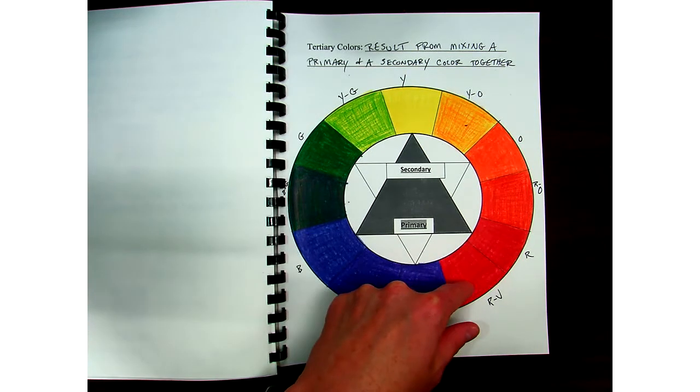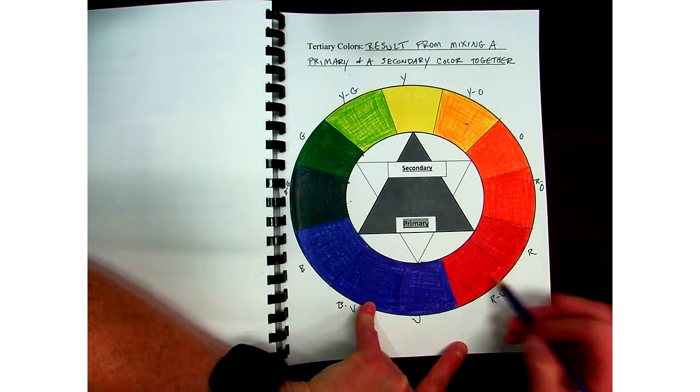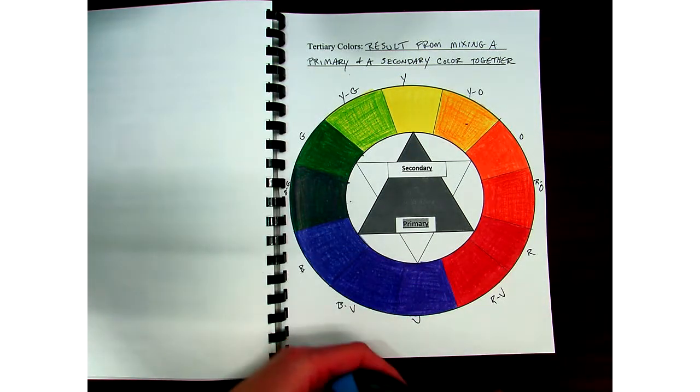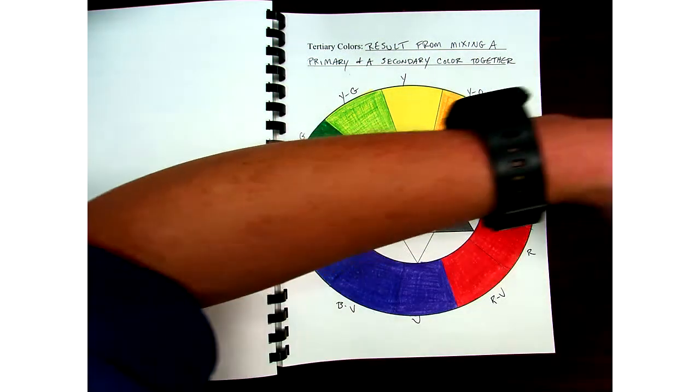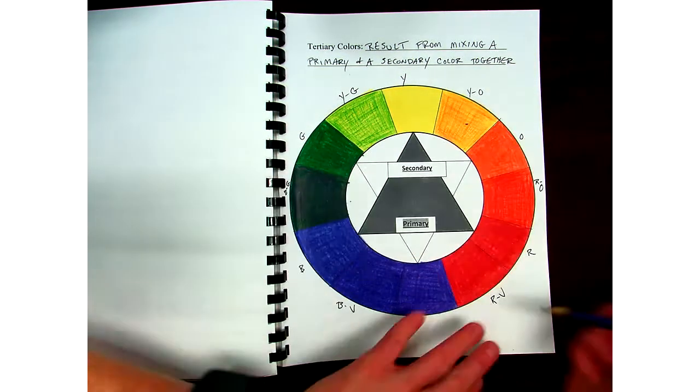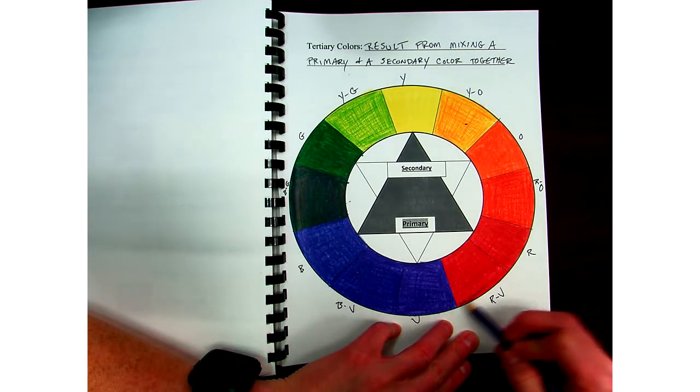And then lastly down here for the red violet, I'm going to take red violet and add violet over top. For blue violet and blue green, I already added the blue to those just so I didn't have to do one for each one.